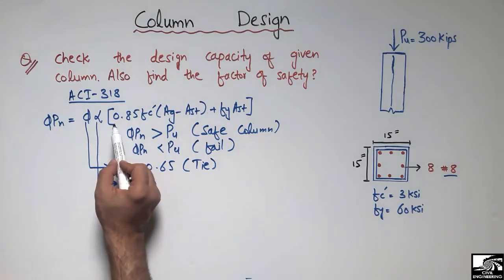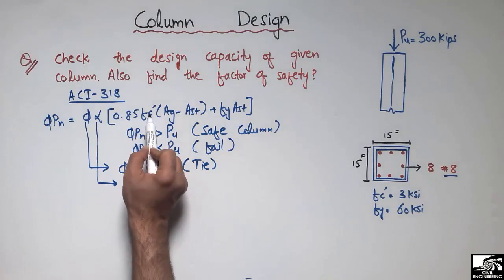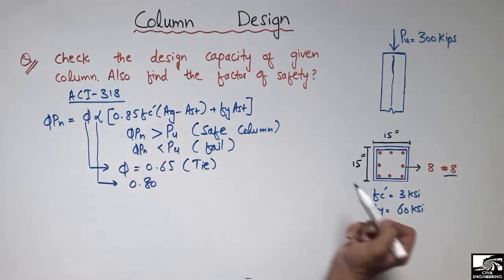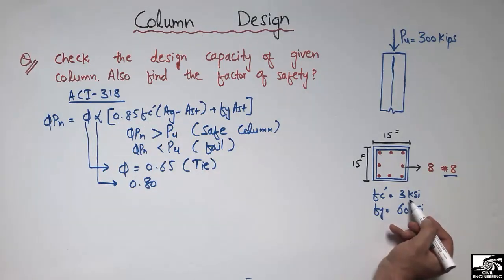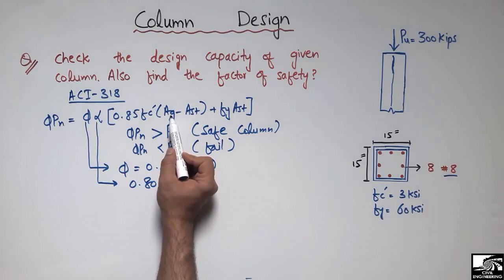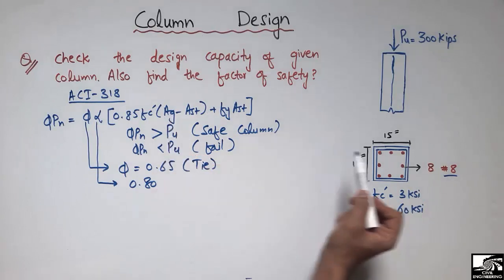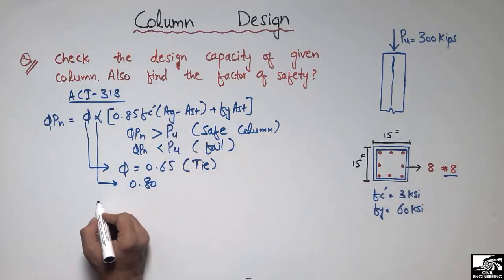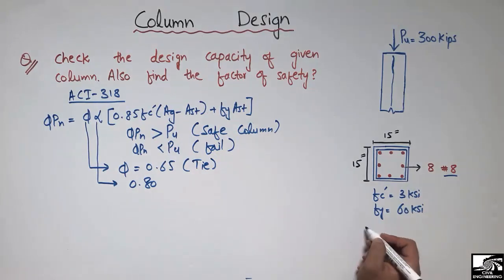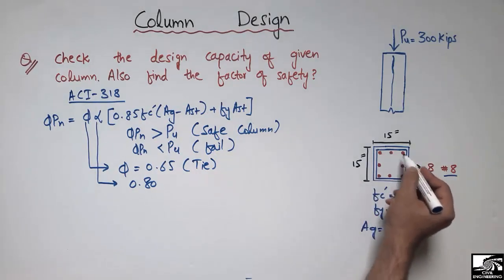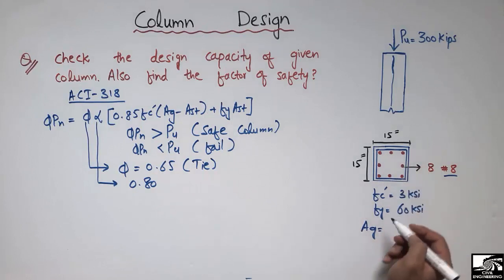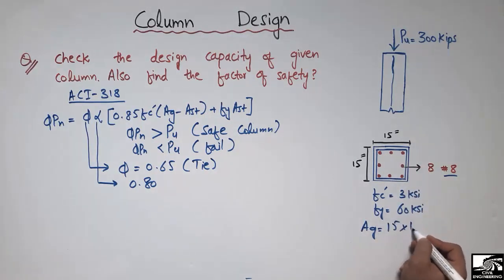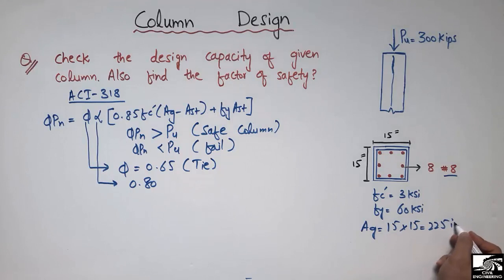The other constant is 0.85. f'c is given as 3 ksi — the concrete compressive strength. Ag is the overall gross cross-sectional area. Since this column is 15 inches by 15 inches, Ag = 15 × 15 = 225 in².